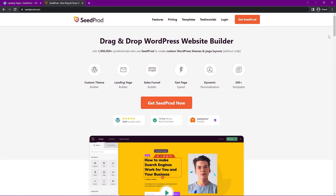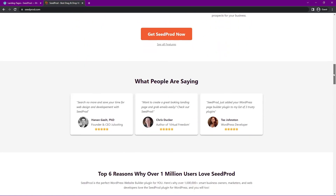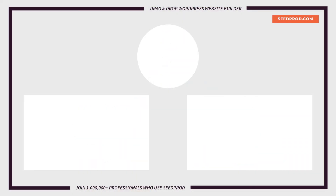Please visit seedprod.com or click the link in the description and join 1 million-plus professionals who use SeedProd to create custom WordPress themes and page layouts without code. Now that you know how to create a blog page on WordPress, check out this video on how to create a WordPress theme from scratch as an Instagram clone, or how to create a travel blog in WordPress — both videos will help you learn how to create beautiful custom themes in WordPress. Thanks for watching and I'll see you in the next video.